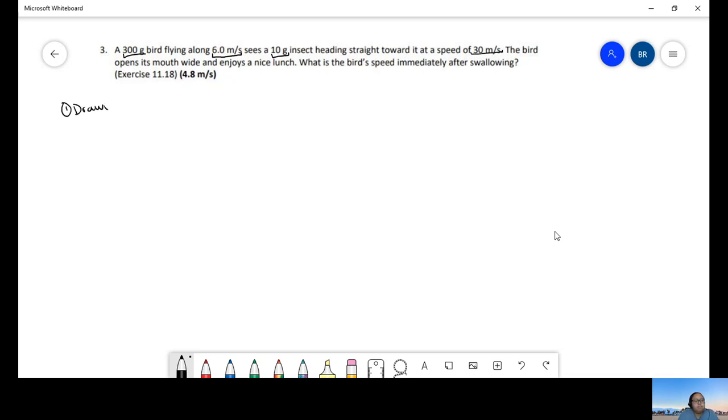So as always, I'm going to make a drawing. It's going to have the bird moving at 6.0 meters per second and 0.3 kilograms. And I have a fly or an insect moving straight, heading straight towards her with a speed of 30 meters per second and a mass of 10 times 10 to the minus 3 kilograms. So I changed this into 10 times 10 to the minus 3 just to change it into kilograms, which would be 0.01 kilograms. That's 10 grams.